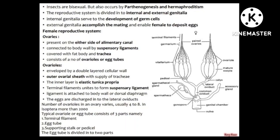The female reproductive system has, first, ovaries. I am describing all the parts with a picture by the side so you can see and understand clearly. The ovary is present on either side of the alimentary canal. It is connected to the body wall by a suspensory ligament, covered with fat body and trachea. It consists of a number of ovules and egg tubes. Ovules are double-layered with a cellular wall; the outer ovule sheath has a supply of trachea and the inner layer is elastic. The tunica ligament is attached to the body wall or dorsal diaphragm.